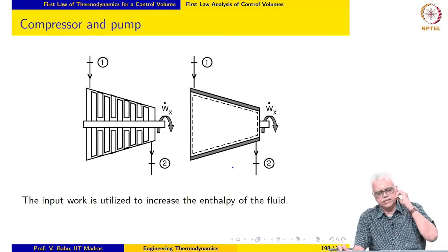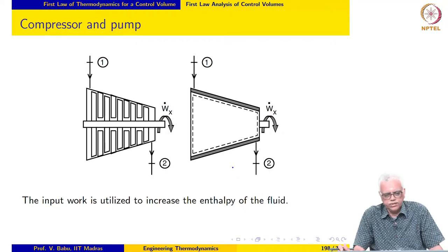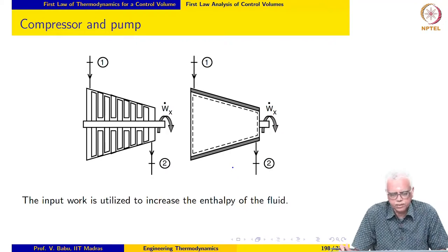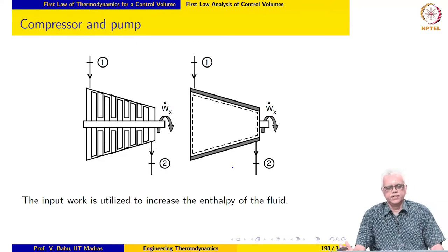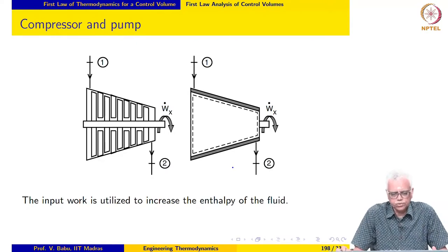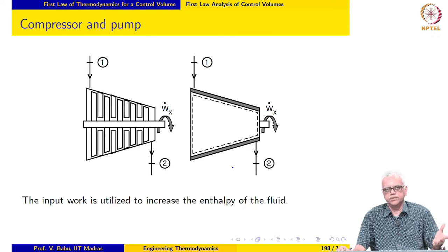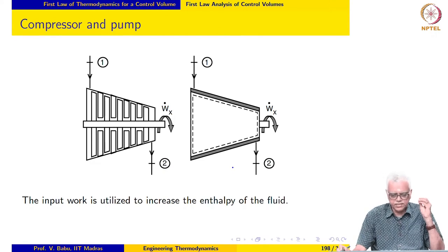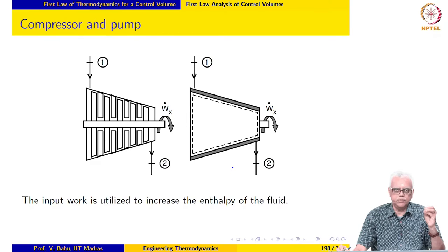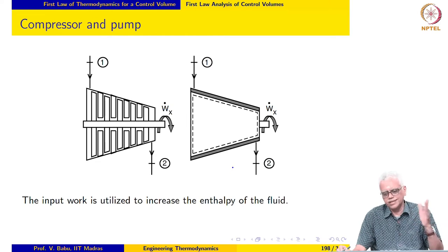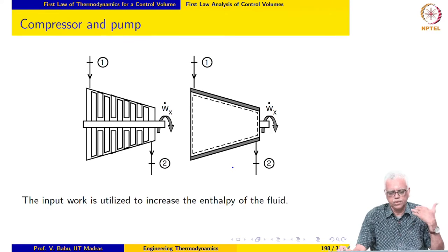The next example that we will look at is a compressor. In the case of a compressor, air is taken in at a steady rate and it is compressed, so the pressure increases across the compressor.